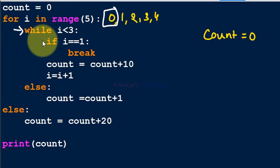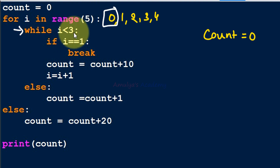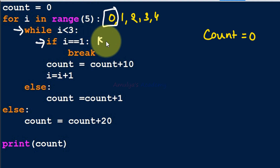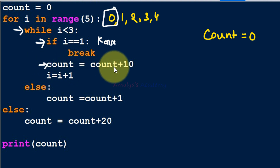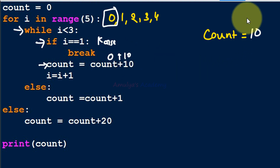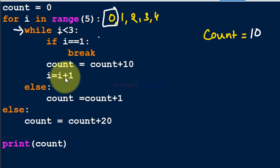With i = 0, we enter the for loop body and check the while condition: 0 < 3 is true, so we execute the loop body. We check if i == 1; i is 0, so 0 != 1 — condition is false. So we execute count = count + 10; count goes from 0 to 10. Then we increment i: i becomes 1.